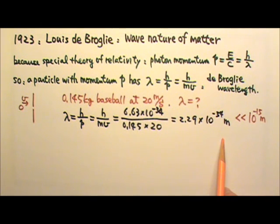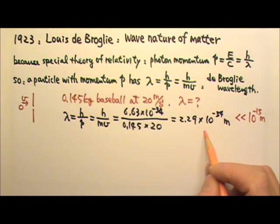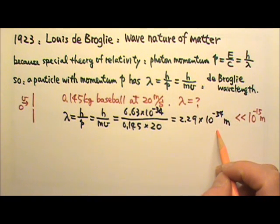This baseball's wavelength is much, much smaller than 10 to the negative 15th meter, the size of a nucleus. So we don't have anything that is close to 10 to the negative 34th meters in size to show the interference or diffraction of the baseball.